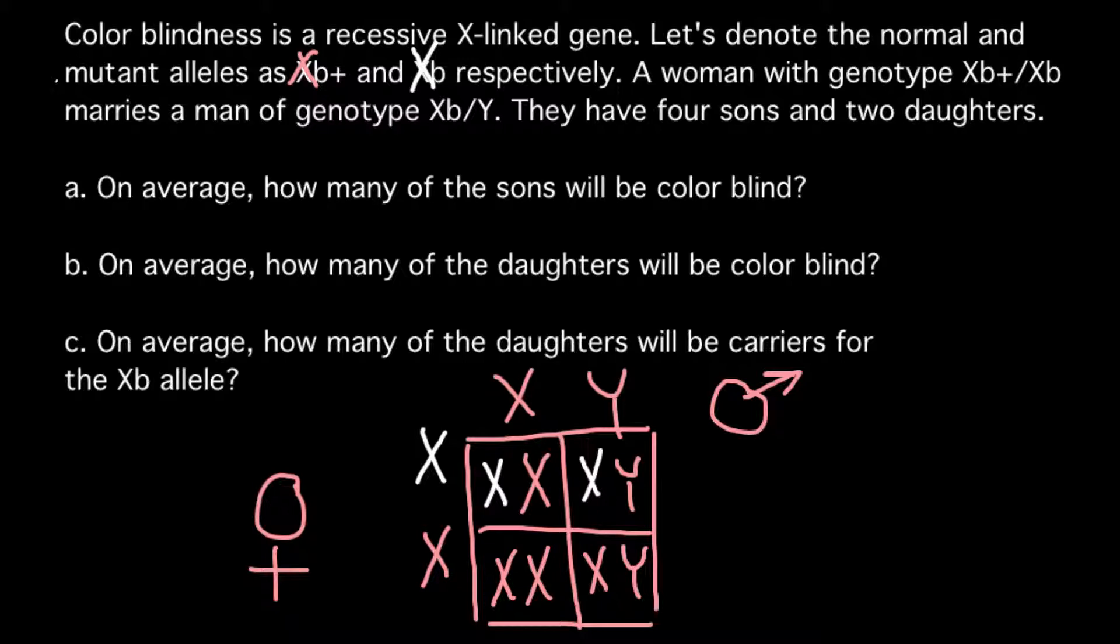So question A: On average how many of the sons will be color blind? And as you see, 50% of the sons would be color blind and 50% would have normal vision. And according to our problem they have four sons.